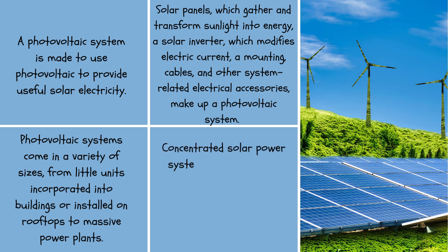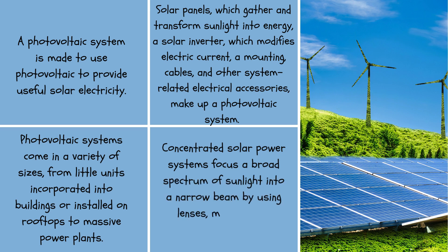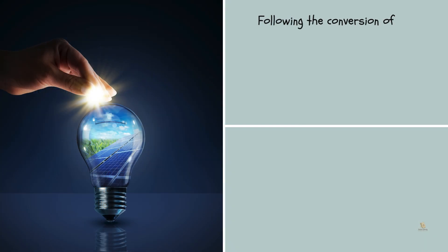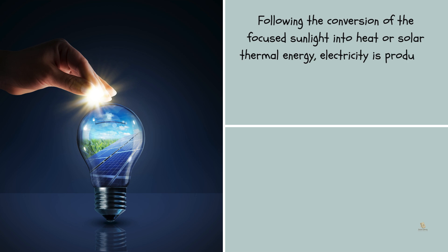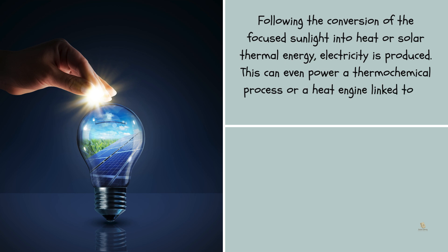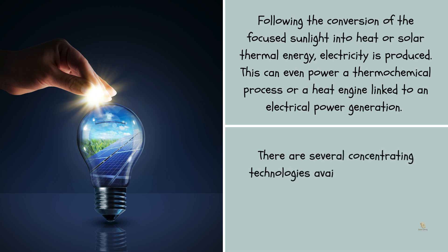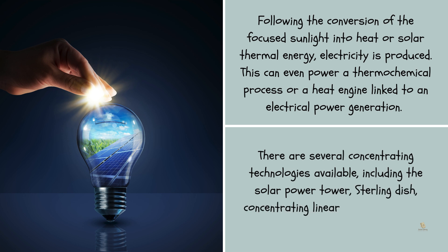Concentrated solar power systems focus a broad spectrum of sunlight into a narrow beam by using lenses, mirrors, and tracking devices. Following the conversion of the focused sunlight into heat or solar thermal energy, electricity is produced. This can even power a thermochemical process or a heat engine linked to an electrical power generator. Several concentrating technologies are available, including the solar power tower, Stirling dish, concentrating linear Fresnel reflector, and parabolic trough.